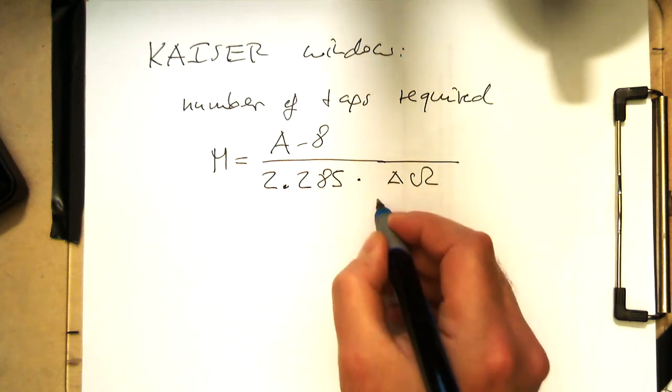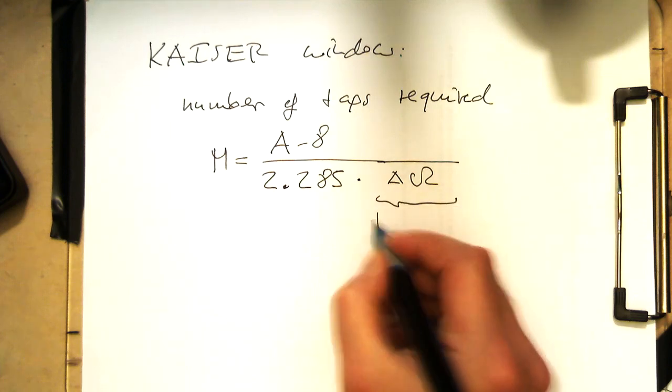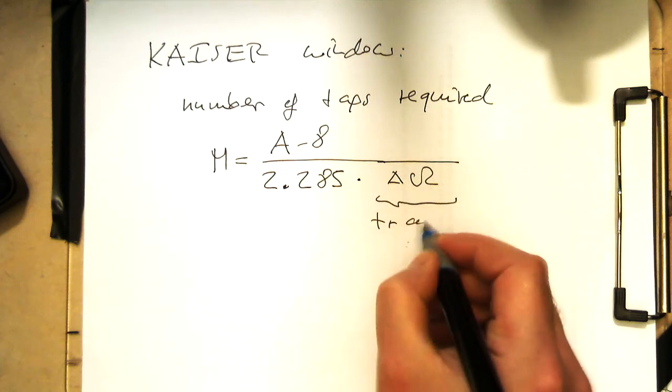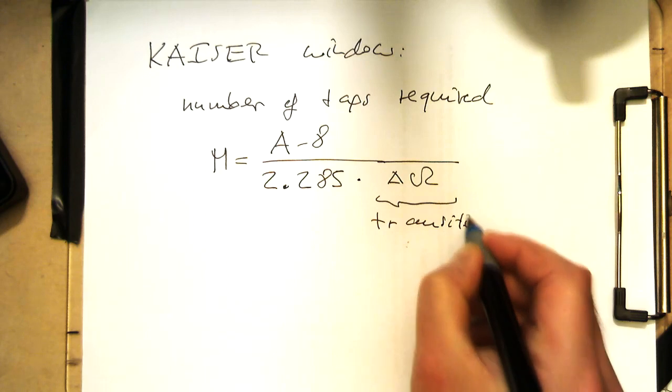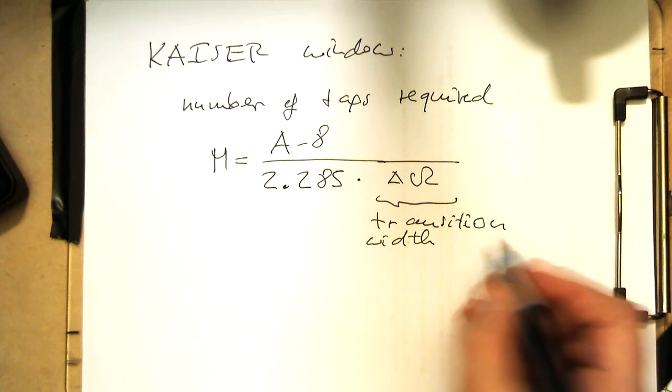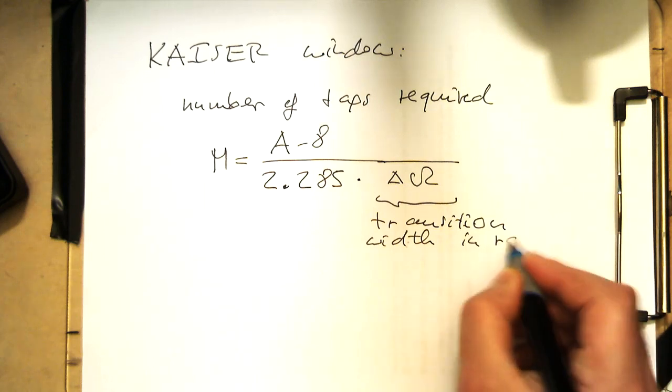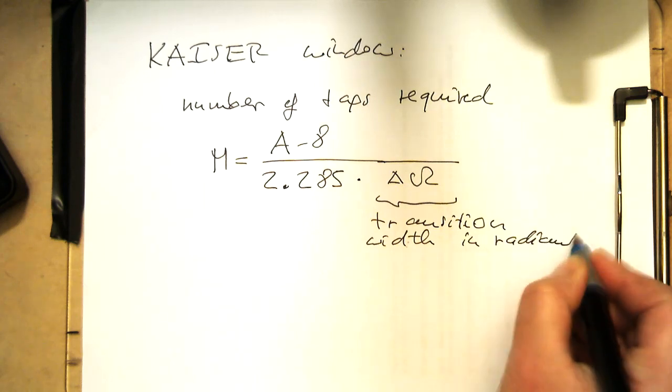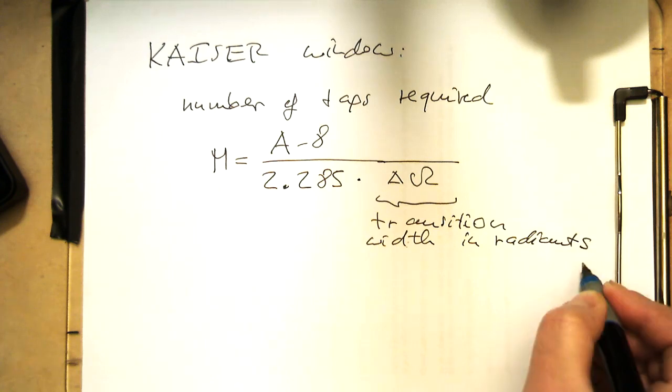And this is calculated with this formula: A minus 8 divided by 2.285 multiplied by delta omega. This is our transition widths in radians.